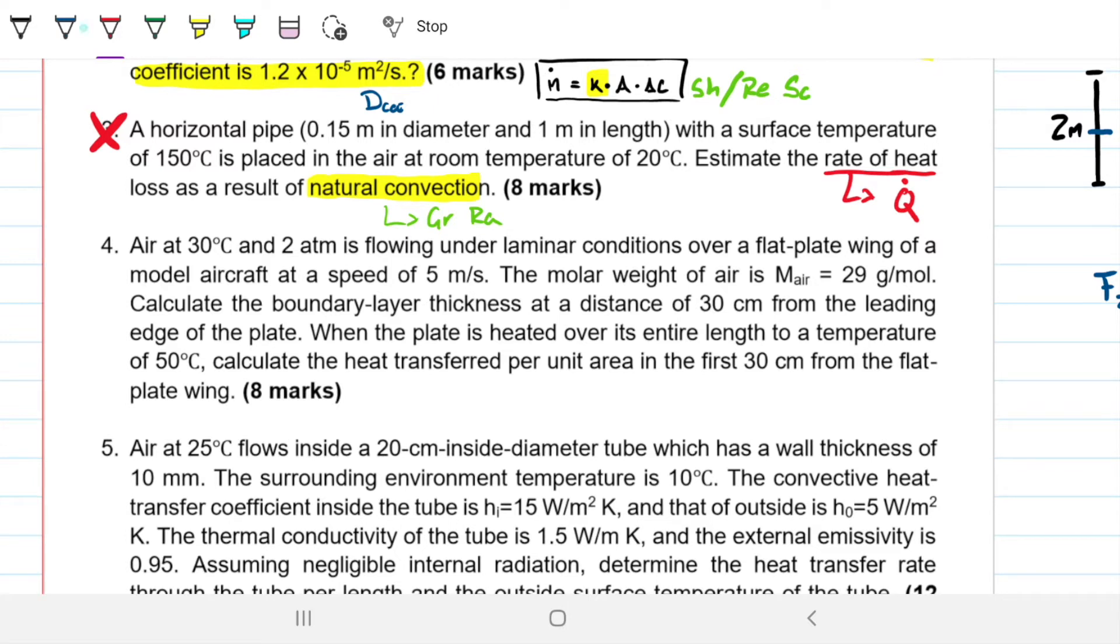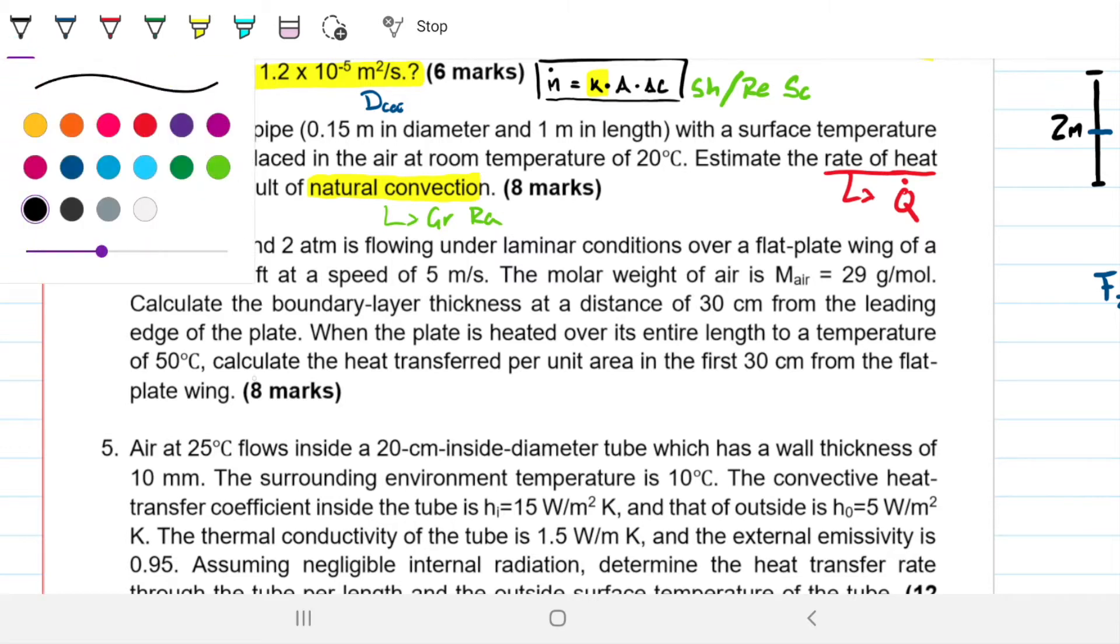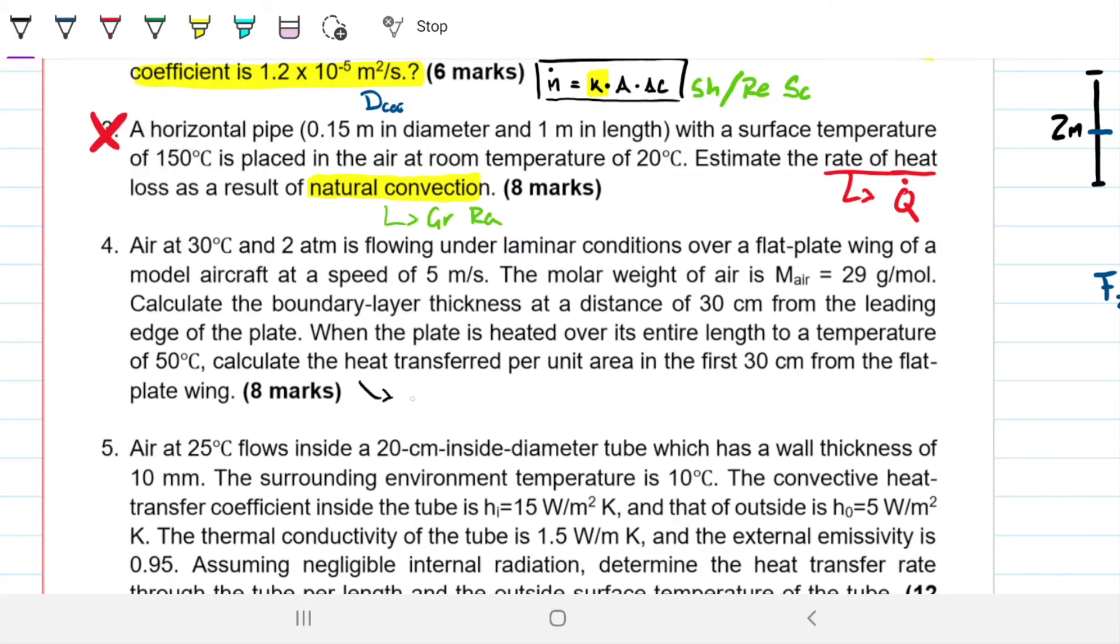So we are to find two different things. The first part is to find the boundary layer, the thermal boundary layer δT of this situation over the plate. And the other question is, what is the heat transfer per unit area, that is lowercase q, or the rate of heat per unit area in the first 30 centimeters of the flat plate.